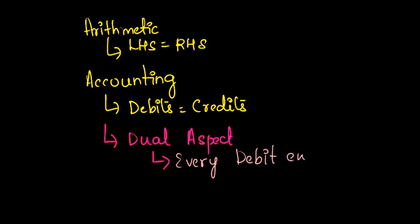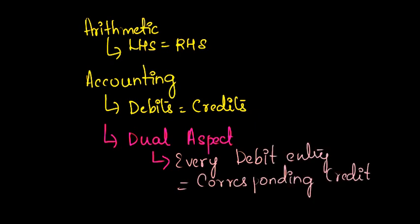The left-hand side, or the debit side, should be equal to the right-hand side, or the credit side. Debit is denoted by the letters DR, whereas credit is denoted by the letters CR.